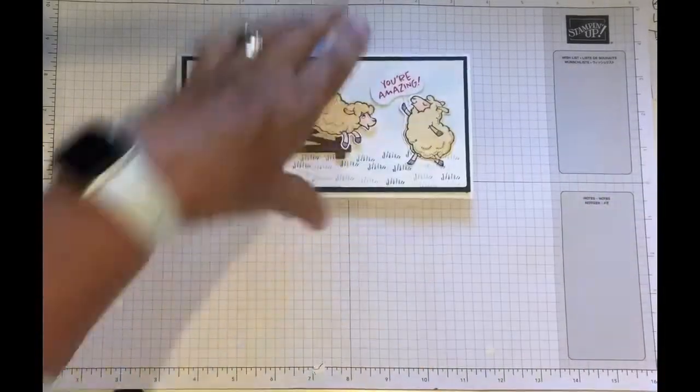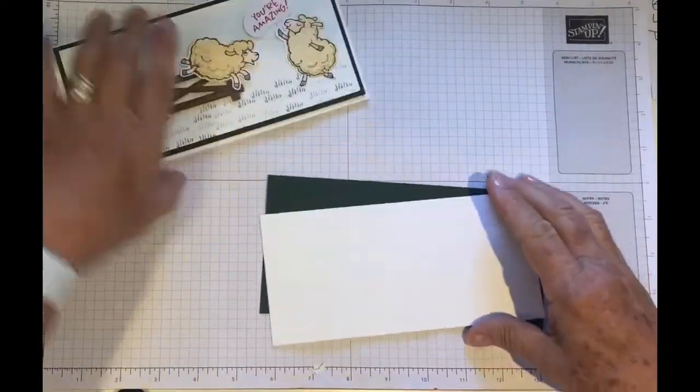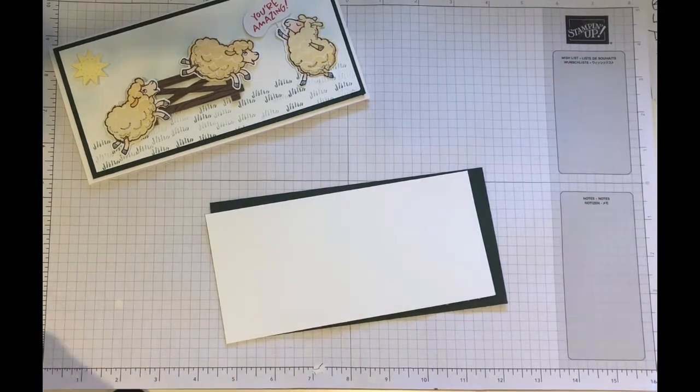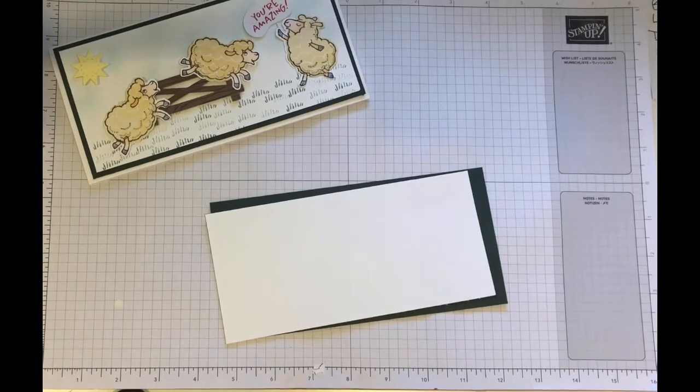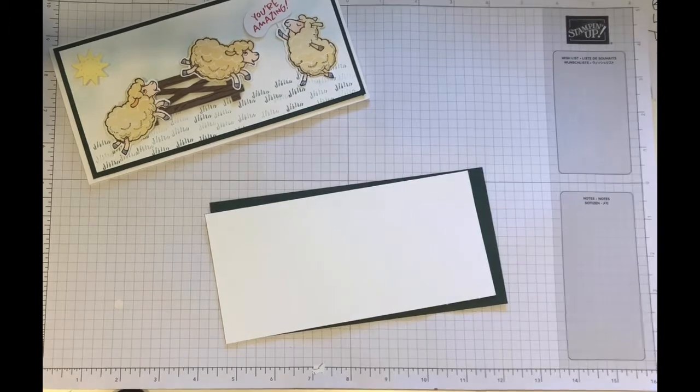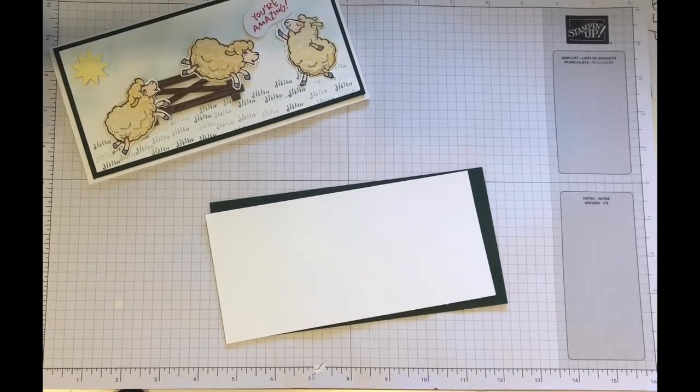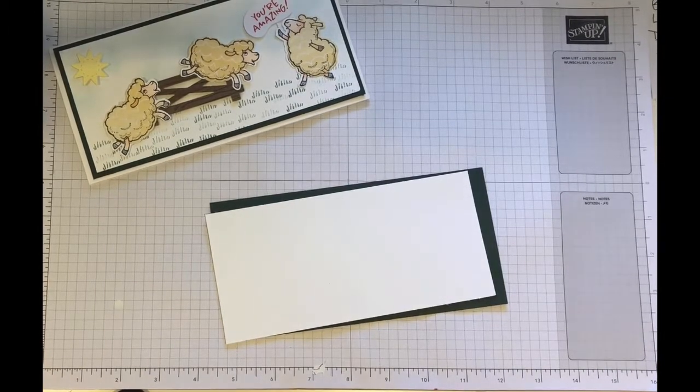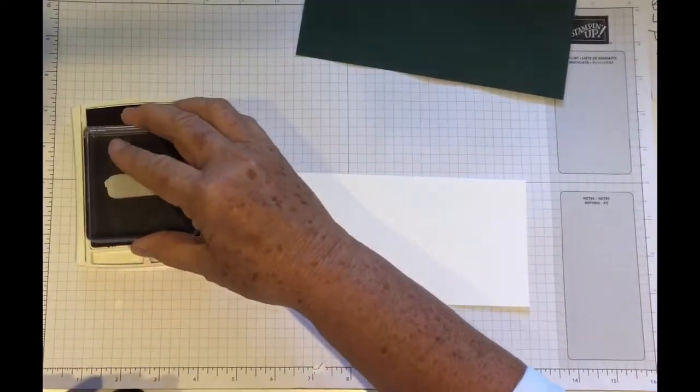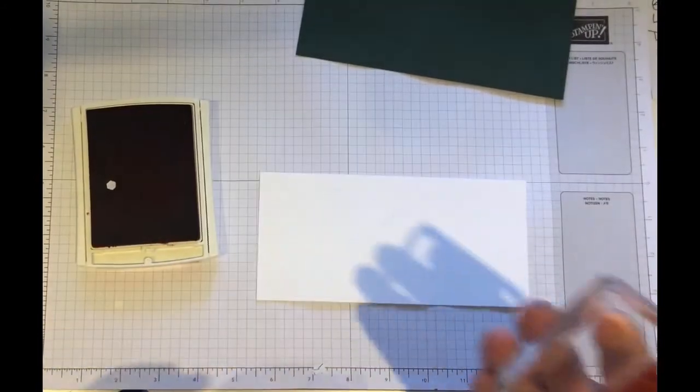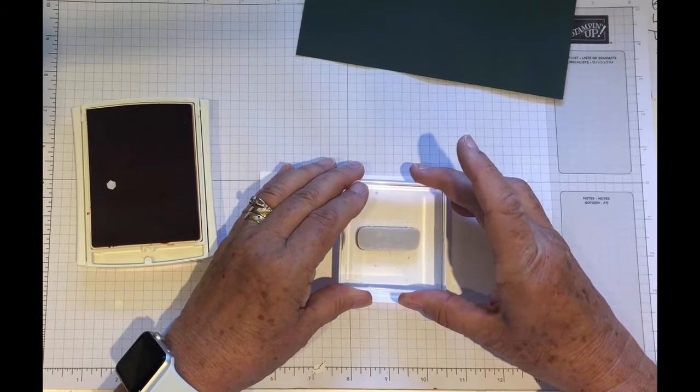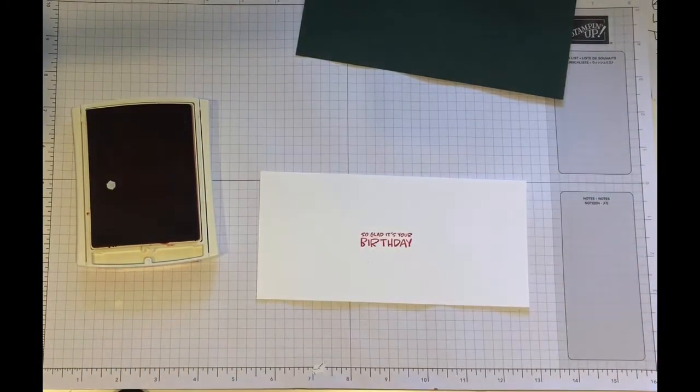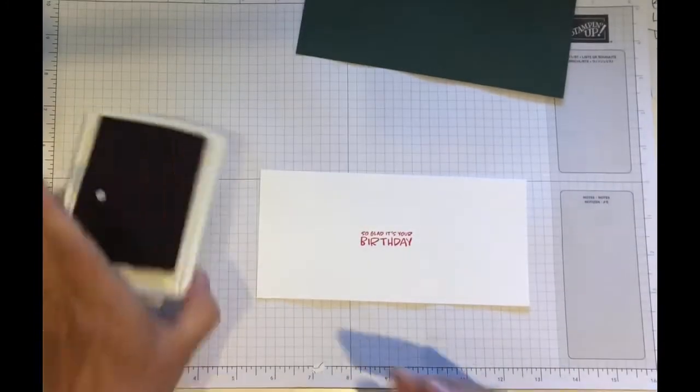Now we just need to add the inside. And we need a piece seven and three quarters by three and three quarters and one piece seven and a half by three and a half. I'm going to use an inscription from the stamp set which is so glad it's your birthday. Again, I'm going to use the coral calypso which will match the inscription on the front of the card. And just stamp it centrally.